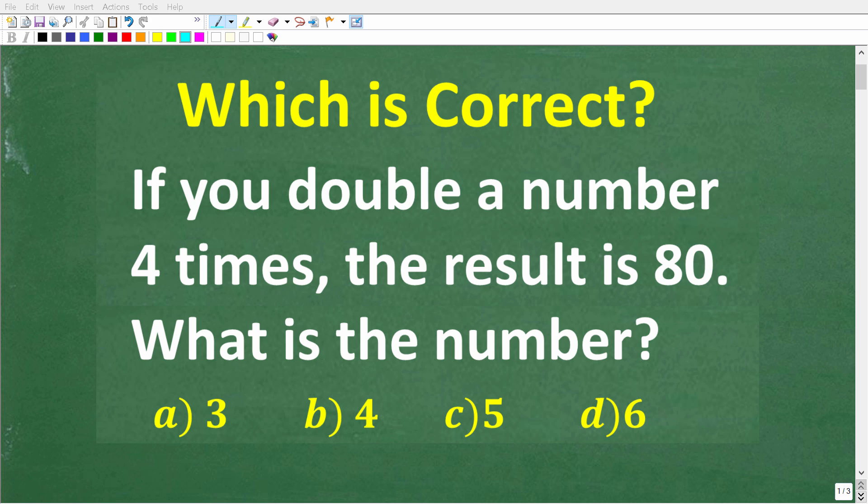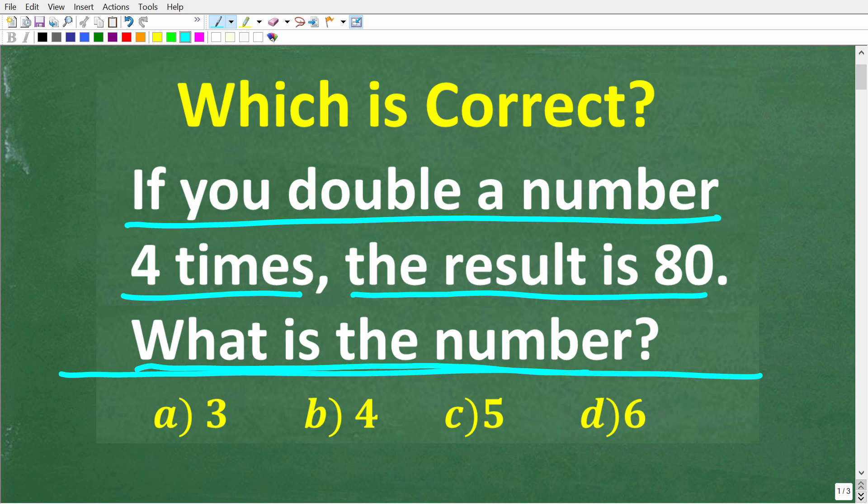Okay, so let's see if you have the math skills to figure out how to solve this simple math word problem. So here is the question. If you double a number four times, the result is 80. What is the number?